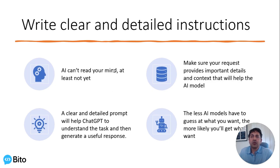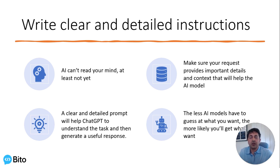The first tip is to write clear and detailed instructions. AI can't read your mind, at least not yet. Make sure your request provides important details and context that will help the AI model. The more you explain what you want, the better the results you get. A clear and detailed prompt will help ChatGPT understand the task and generate a useful response.